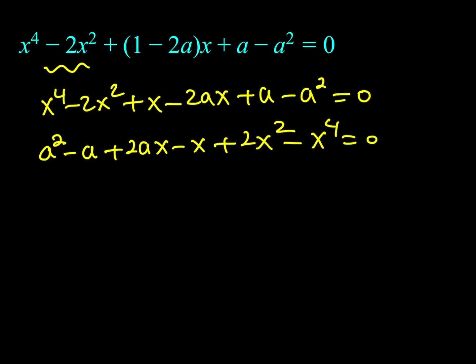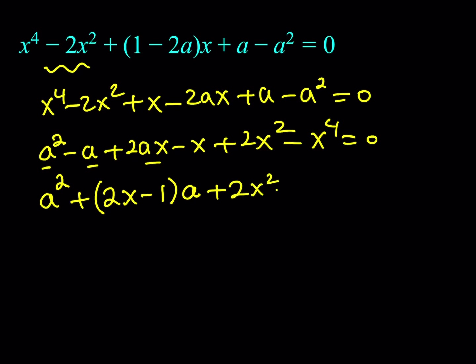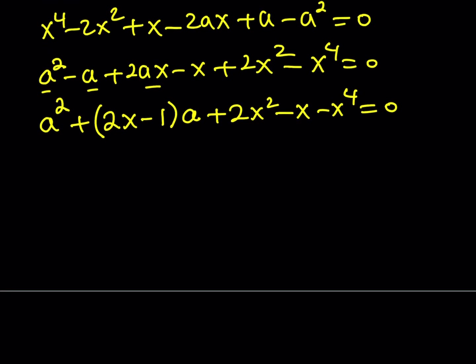Now let's arrange this. We have a squared, and the two terms containing a give us (2x minus 1) times a. What's left is 2x squared minus x minus x to the fourth, and that equals 0. This is a quadratic in a, so we can solve it with the quadratic formula.